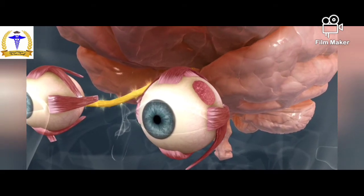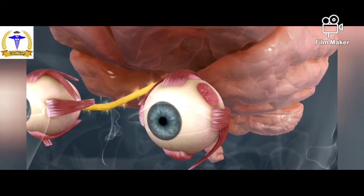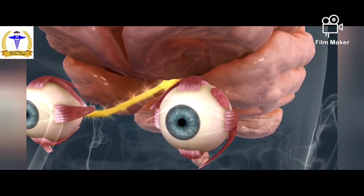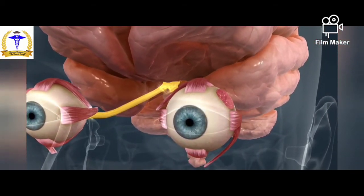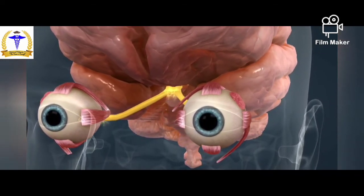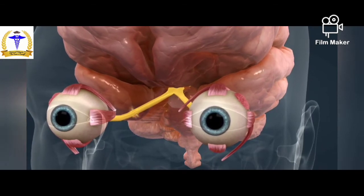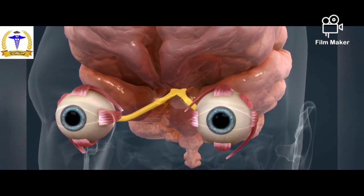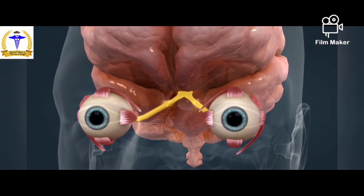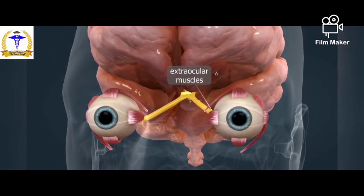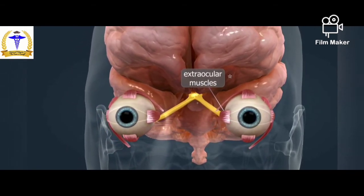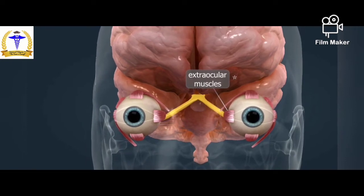Optic nerve fibers run to the visual cortex found in the occipital lobe via the optic tract. The sense of light is found in the cerebral cortex. The amount of light entering the eyes is regulated by the pupillary light reflex. In strong light, the pupil is contracted by the smooth muscles of the iris, while in low light it is dilated. The pupillary light reflex is an unconditioned reflex; its center is located in the brain stem. Abnormal operation of the pupillary reflex is therefore an indication of injury to the brain stem.